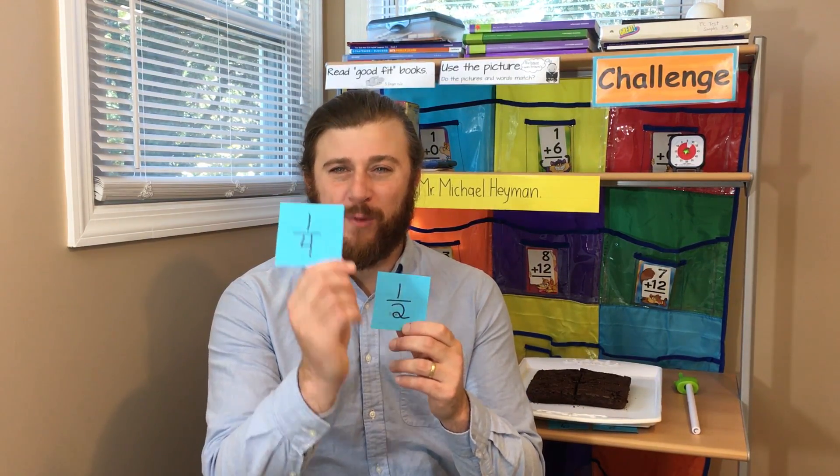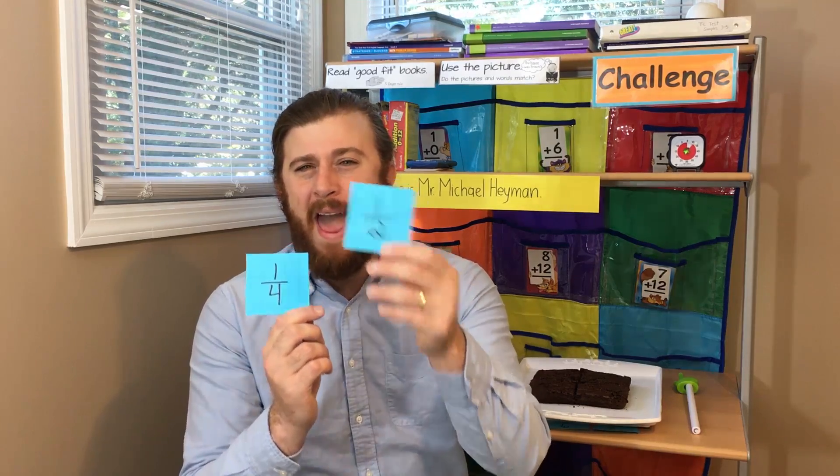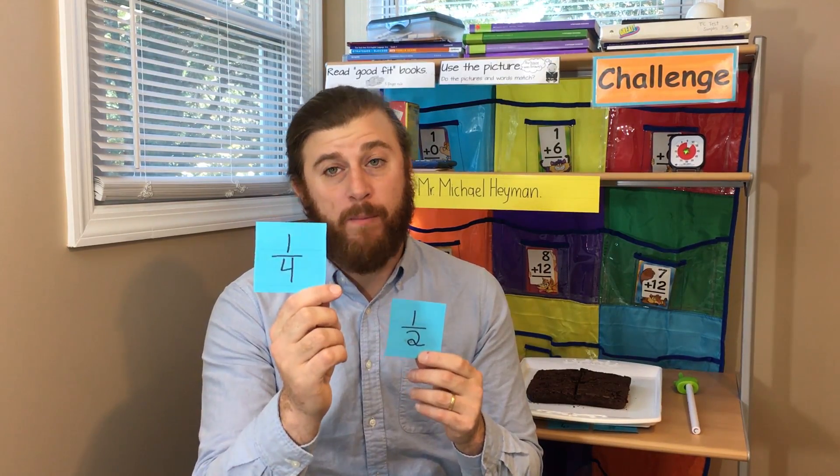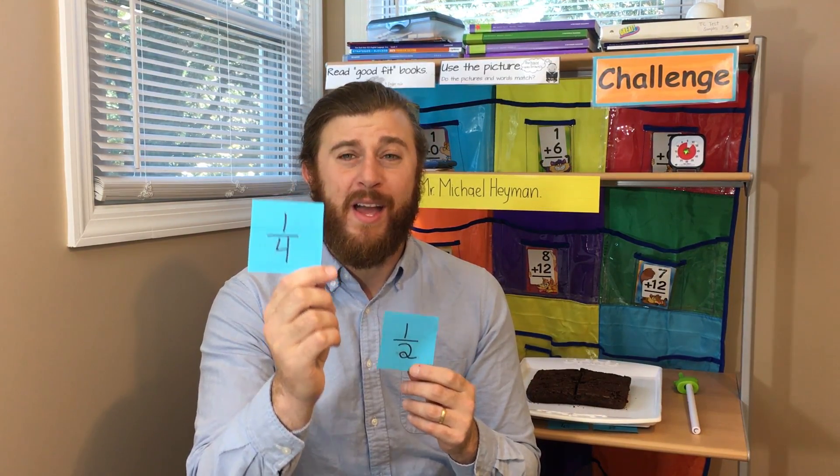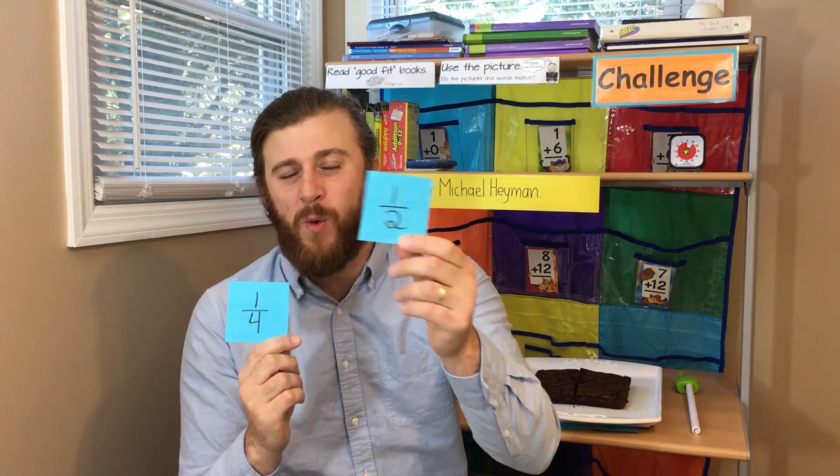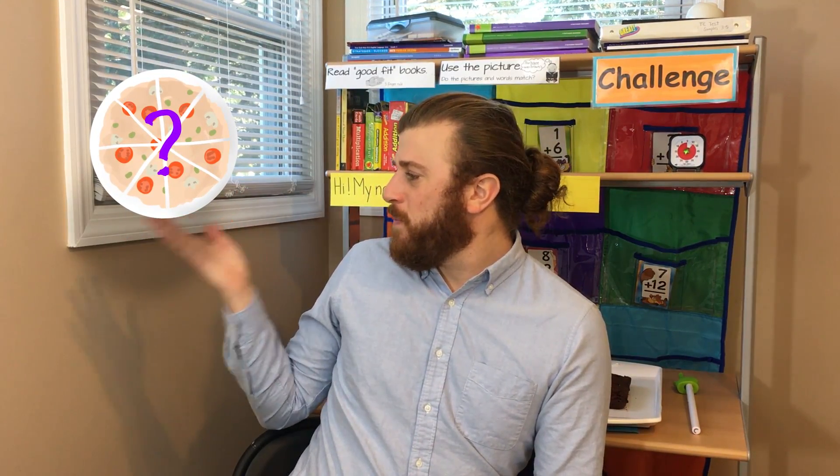One common misconception students have about fractions is when reasoning about their sizes. Students tend to think that one fourth is greater than one half because the number on the bottom — the denominator of one fourth — is greater than the denominator of one half. The pictures on the back of the fraction cards can help fix these misconceptions. Using visuals like our pizzas or our brownies can help clear up these misconceptions.